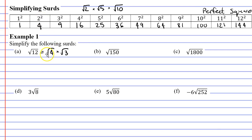When you square root a perfect square, you get a nice whole number. The square root of 4 is 2. So we can rewrite this as 2 times root 3, or simply 2 root 3. We have now simplified root 12 into 2 root 3.